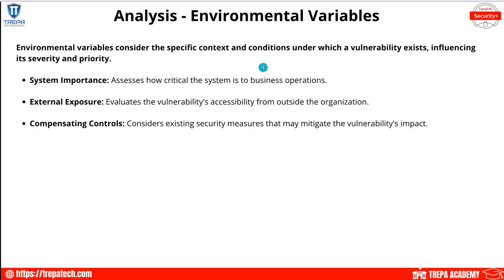Environmental variables consider the specific context and conditions under which a vulnerability exists. For example, if we have an open SMB port on a legacy file server that needs to stay open, we can at least filter it outbound. In that environment, the vulnerability is only exposed to insider threats, so we need to increase physical security, ensure access control methods are solid, and educate users on insider threats — those become our compensating controls.